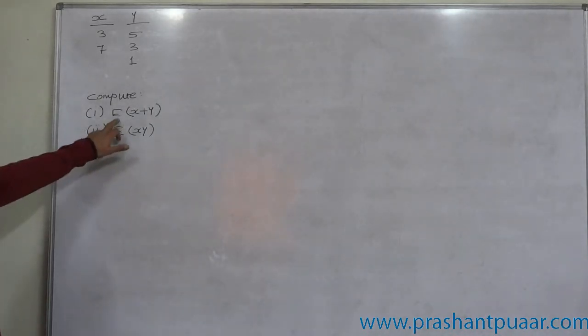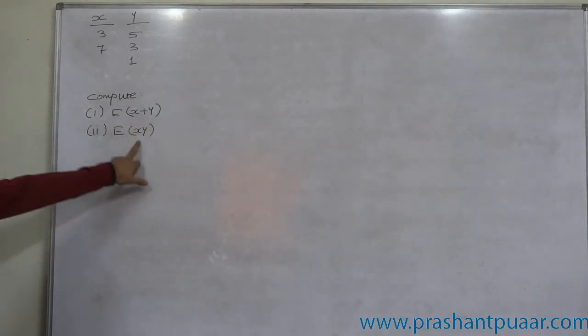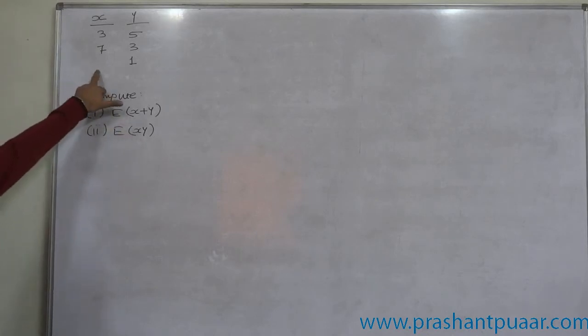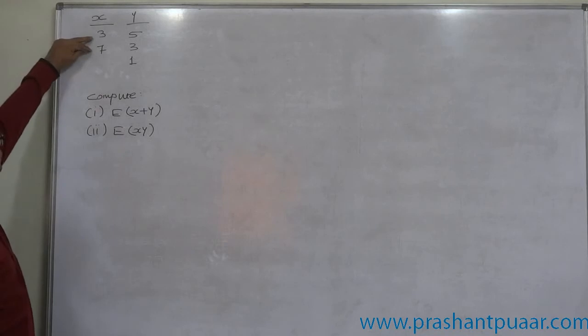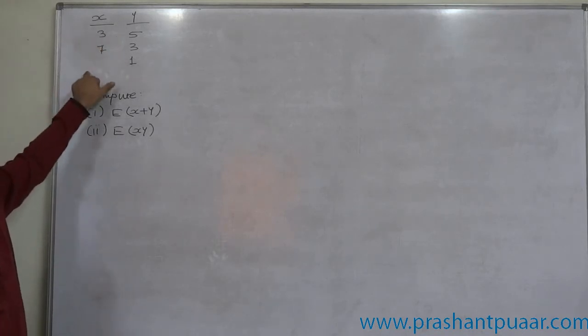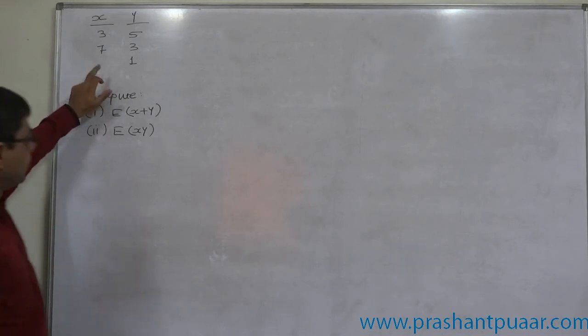We require to compute E of x plus y and E of xy. This can be treated as case of two independent variables. Y is independent. See, x has only two values, y has three values. Direct multiplication is not possible. So this is the case of independent variables.